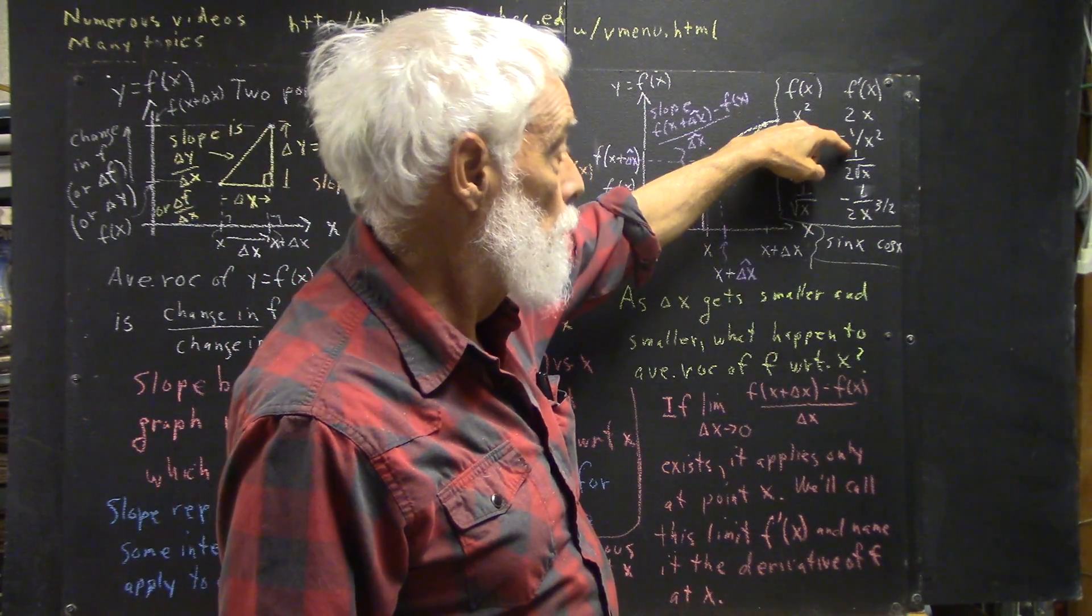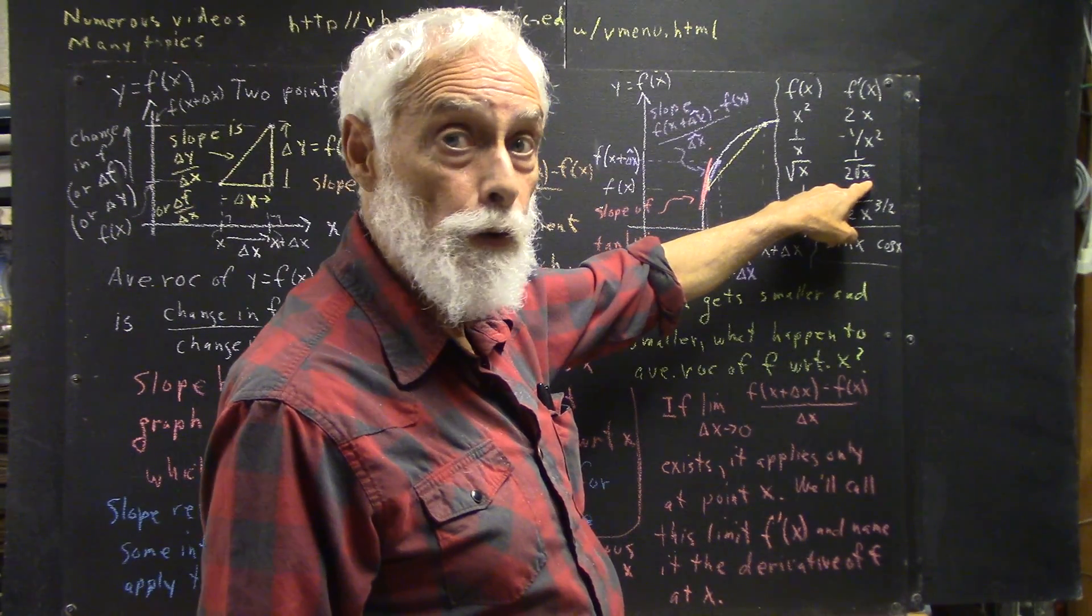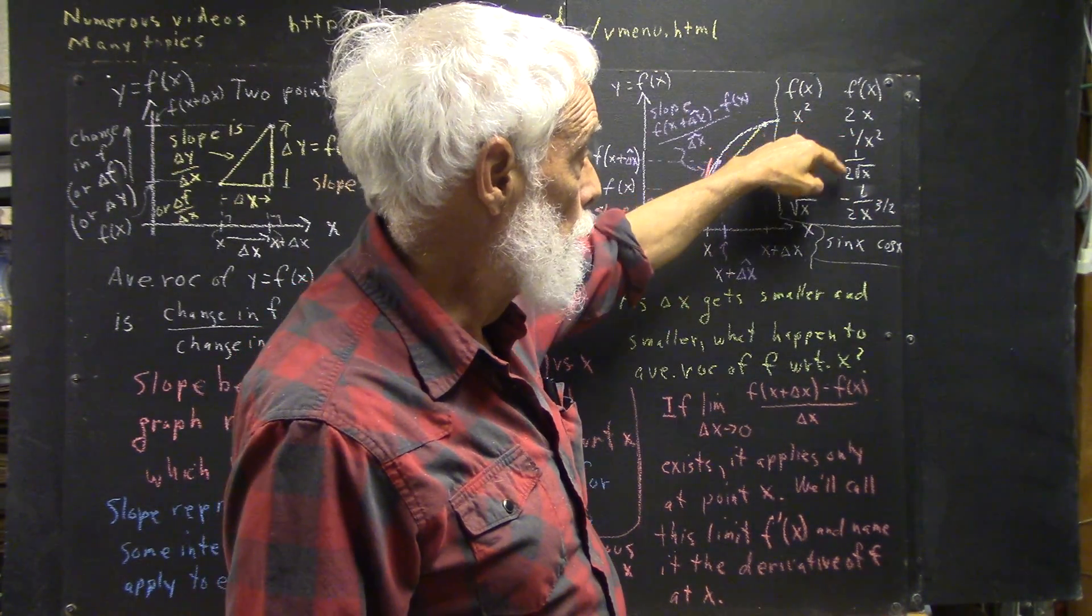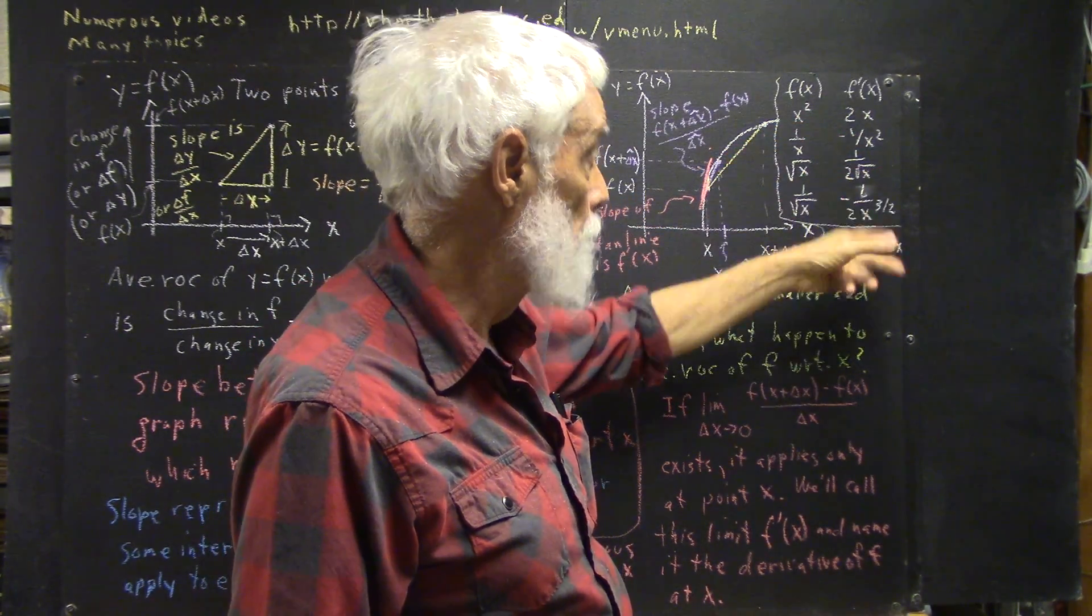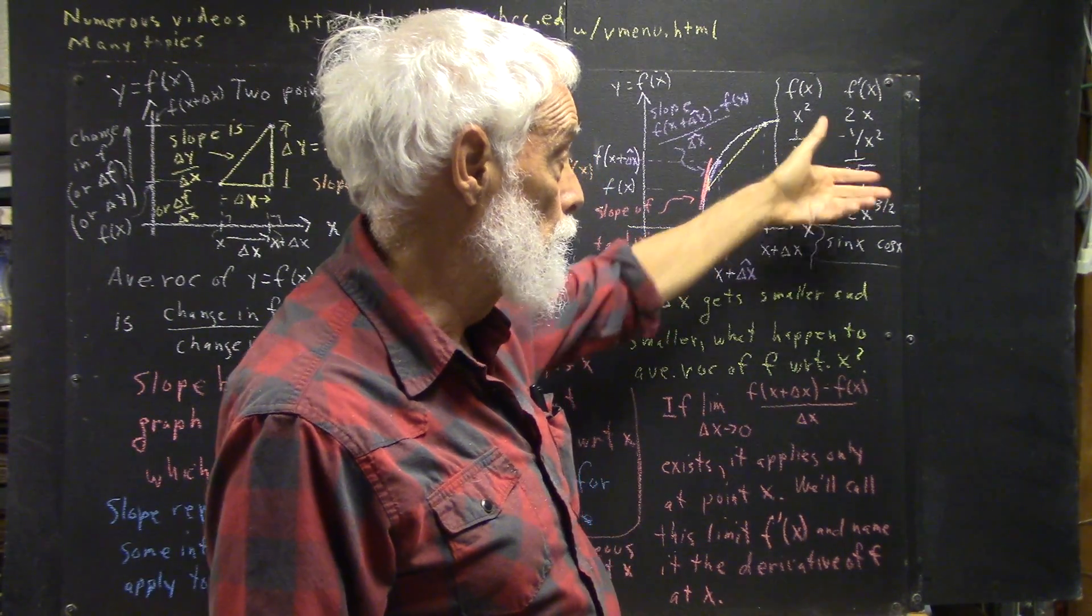What's the slope at that point? Well, the slope is going to be what you get when you plug in x equals 4 here. You're going to have a slope of 1 over 2 times the square root of 4, which is 1 over 2 times 2, which is 1 fourth.